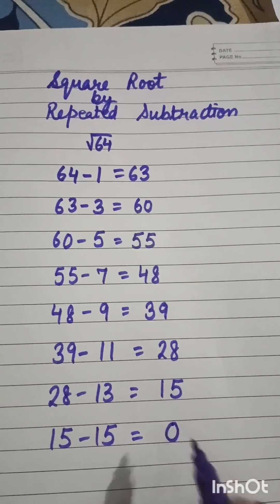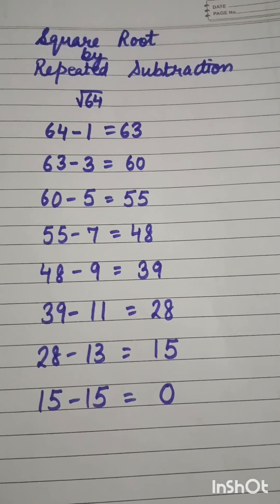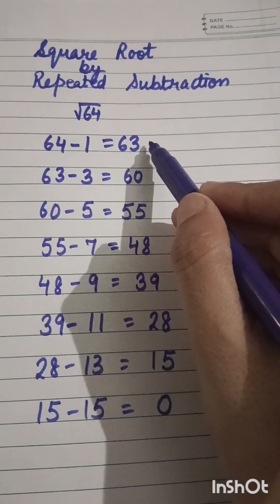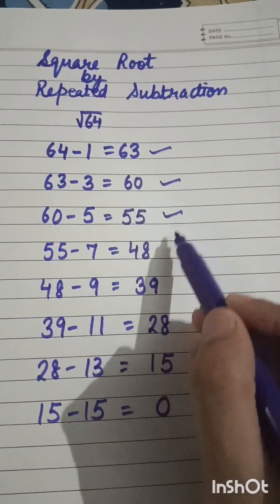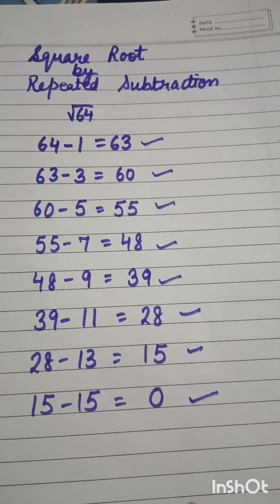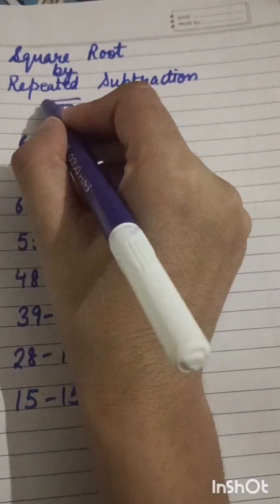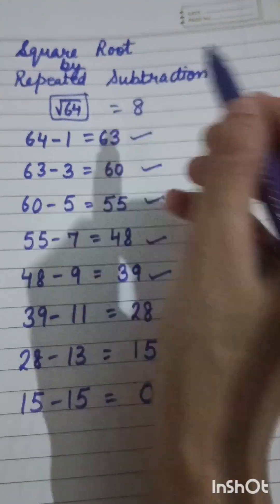So now we will count the number of steps. 1, 2, 3, 4, 5, 6, 7, 8. So how many number of steps are there? Square root of 64 will be 8.